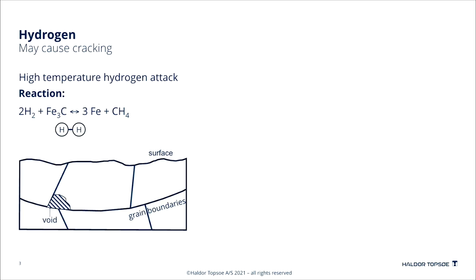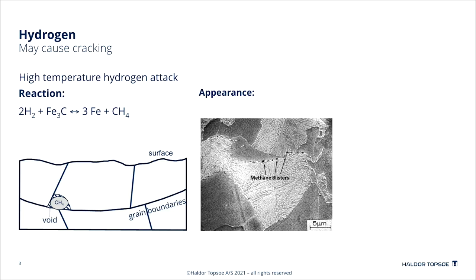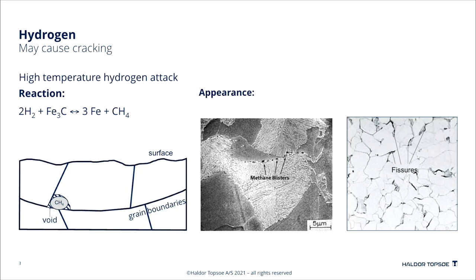Hydrogen may cause cracking by the damage mechanism high-temperature hydrogen attack. Hydrogen reacts with the carbides in the metal, Fe3C, forming methane. It is illustrated here where we have hydrogen going to the metal surface, dissociating and entering the steel and diffusing into it. Here it reacts with carbon or carbides forming methane that collects at voids. As pressure builds up, the voids become blisters. These blisters transform into micro-cracks as the pressure builds up and they become macro-cracks. This corrosion mechanism is a risk for temperatures above 200 degrees C.